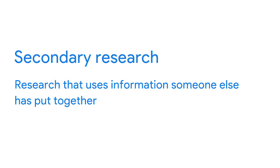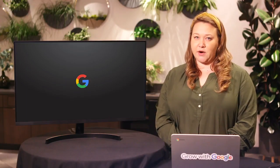Secondary research is research that uses information someone else has put together. Secondary research can be information from books, articles, or journals. You've probably done secondary research before and not even realized it. Did you know looking up the statistics of a sports team counts as secondary research? Most of the time, secondary research is done at the very beginning of the product development lifecycle, before any ideation happens.